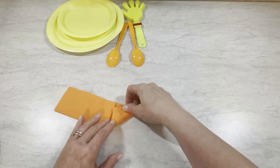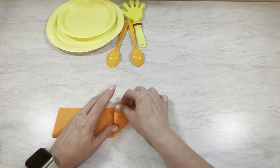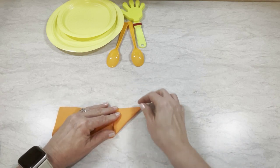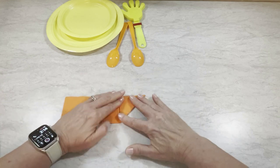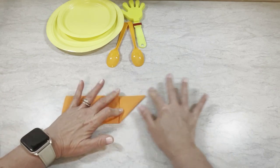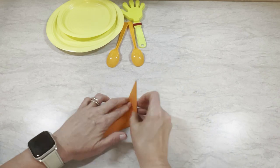And along that next edge I'm just continuing to fold along each previous fold. We're getting that same sort of triangle shape as we go along.